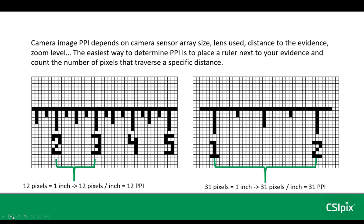Assume these two graphics are images of rulers. In this first image, if you count the number of pixels that span 1 inch, you'll count 12 of them — so that means this image has 12 pixels per inch. In this second image, if you count the pixels that span 1 inch, you would count 31, so this image is 31 pixels per inch.